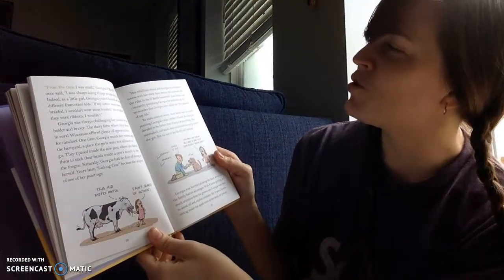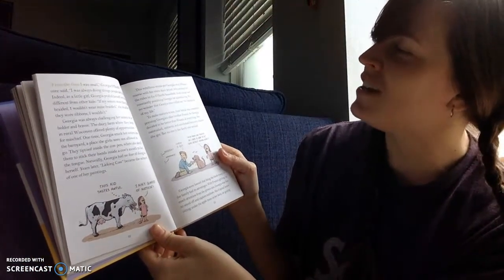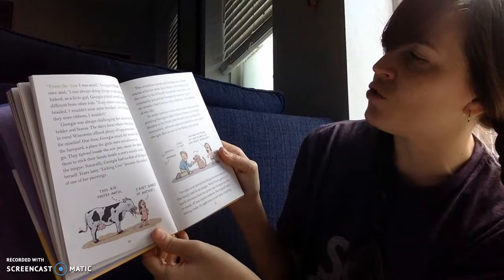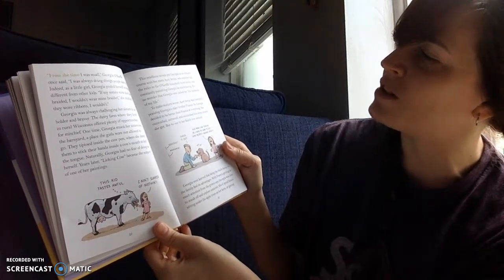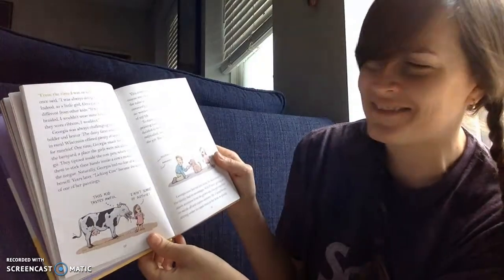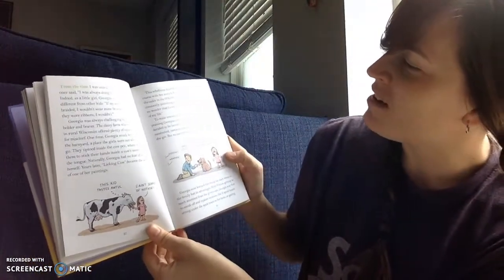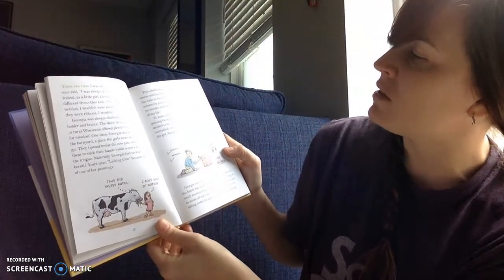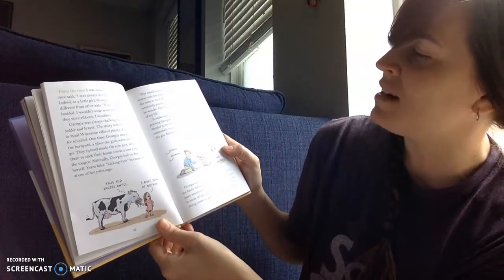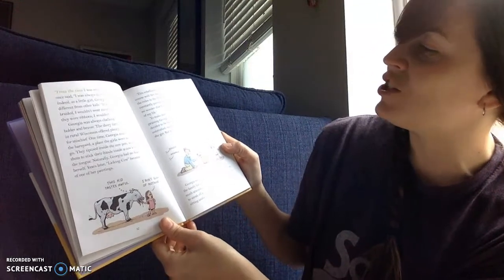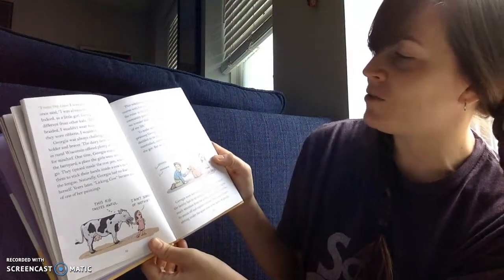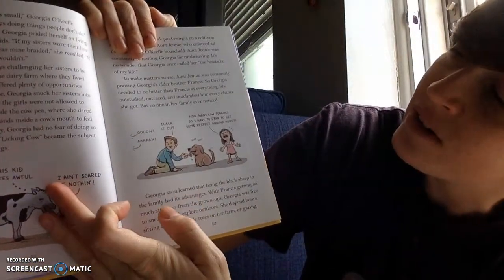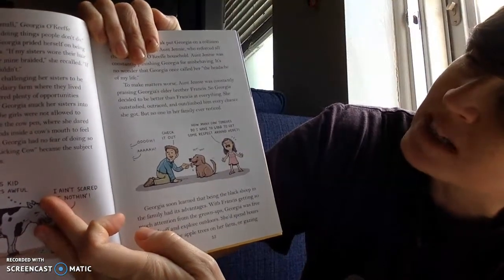Years later, Licking Cow became the subject of one of her paintings. I didn't know that. This rebellious streak put Georgia on a collision course with her stern Aunt Jenny, who enforced all the rules in the O'Keeffe household. Aunt Jenny was constantly punishing Georgia for misbehaving. It's no wonder that Georgia once called her the headache of my life. To make matters worse, Aunt Jenny was constantly praising Georgia's older brother, Francis. So Georgia decided to be better than Francis at everything. She out-studied, out-raced, and out-climbed him every chance she got. But no one in her family ever noticed. How many cow tongues do I have to grab to get some respect around here?